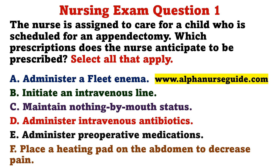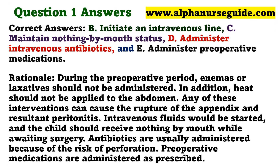The nurse is assigned to care for a child who is scheduled for an appendectomy. Which prescriptions does the nurse anticipate to be prescribed? Select all that apply. A) Administer a Fleet enema. B) Initiate an intravenous line. C) Maintain nothing by mouth status. D) Administer intravenous antibiotics. E) Administer preoperative medications. F) Place a heating pad on the abdomen to decrease pain. The correct answers are B, C, D, and E.